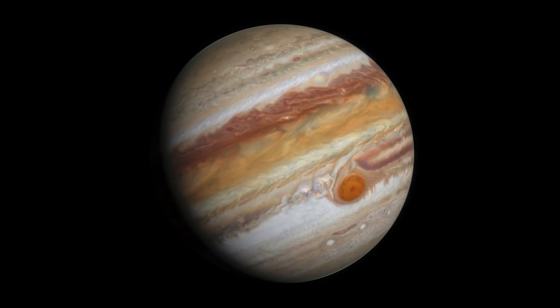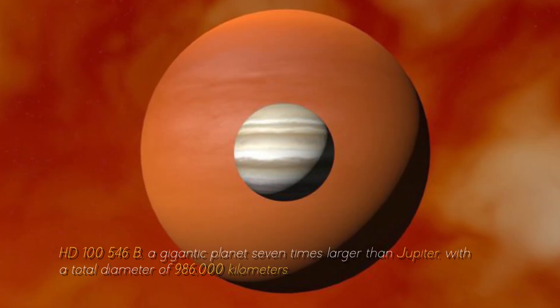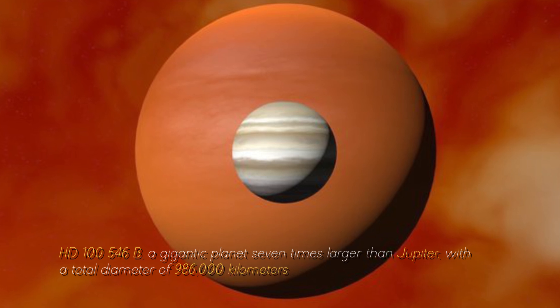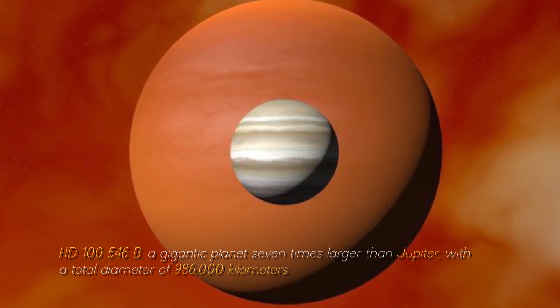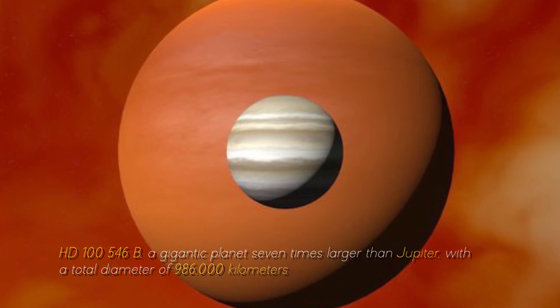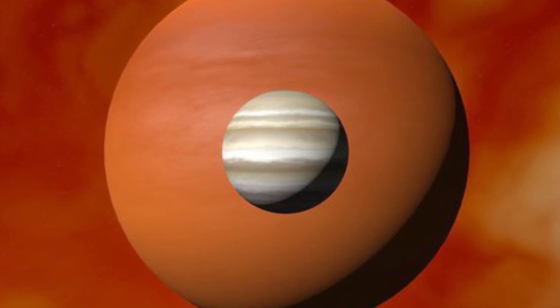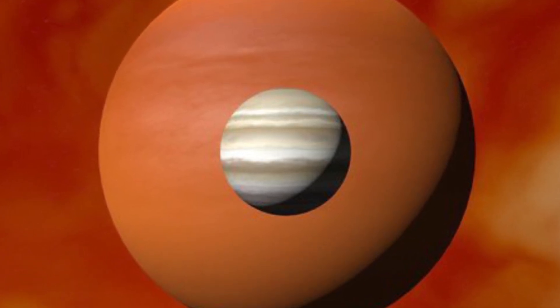Now, let's compare Jupiter with the largest planet in the known universe, HD-10546b, a gigantic planet seven times larger than Jupiter, with a total diameter of 986,000 kilometers. You can imagine what Earth would look like near this cosmic monster, can't you?